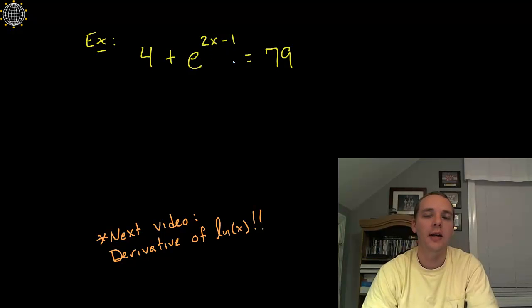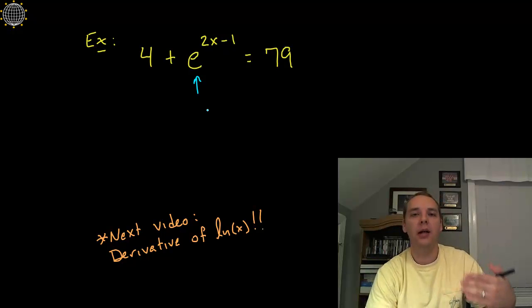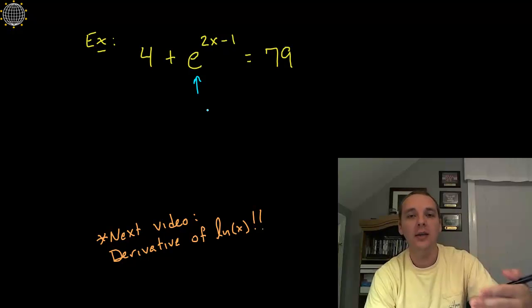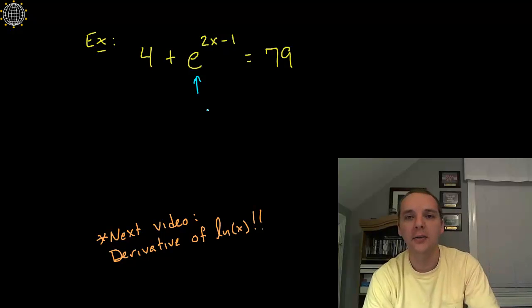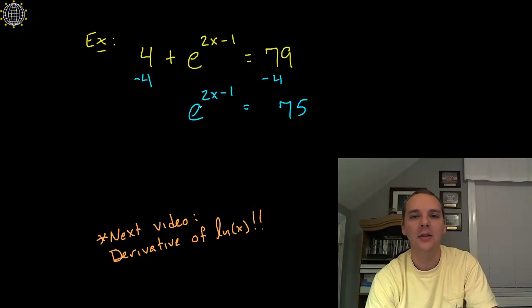Let's say we wanted to solve this exponential equation. Well I see the thing that's in the way of solving for x is that e, and so at some point I'm going to need to apply a natural log because that will undo the e function, being that it's the inverse of e^x. So we can't apply natural logs until the exponential function's by itself. So step one would be to subtract 4 from both sides. So we'd have e^(2x-1) = 75.